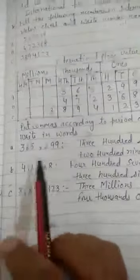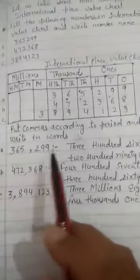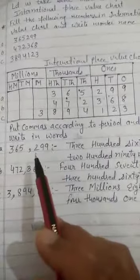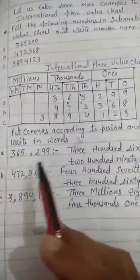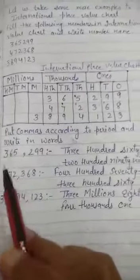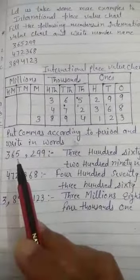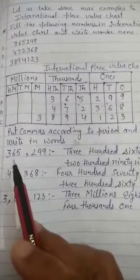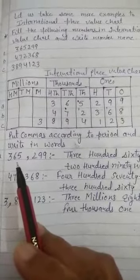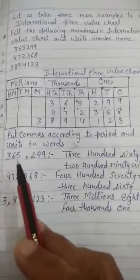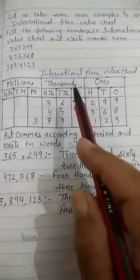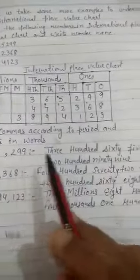So see the first number, 299 comes in ones period and 365 comes in 1000 period. So write this number in words, 365,000 and 299.